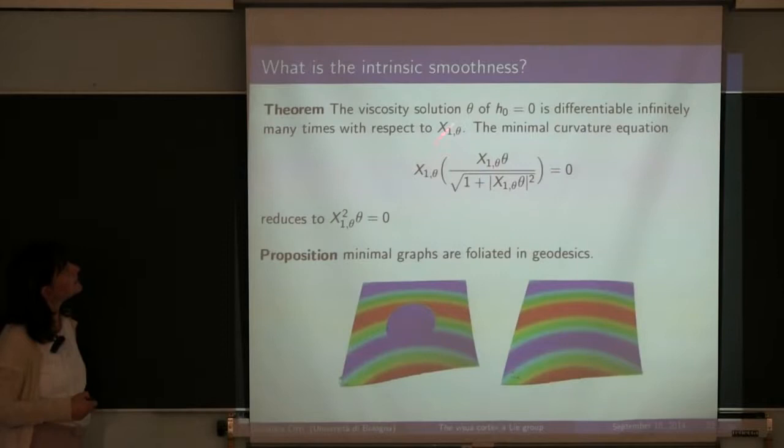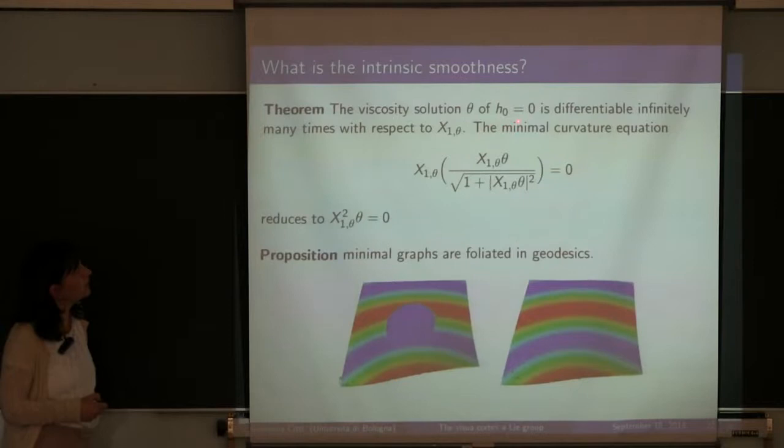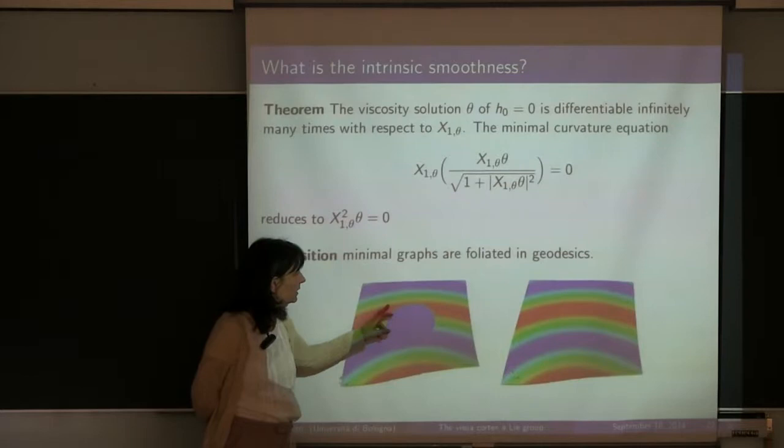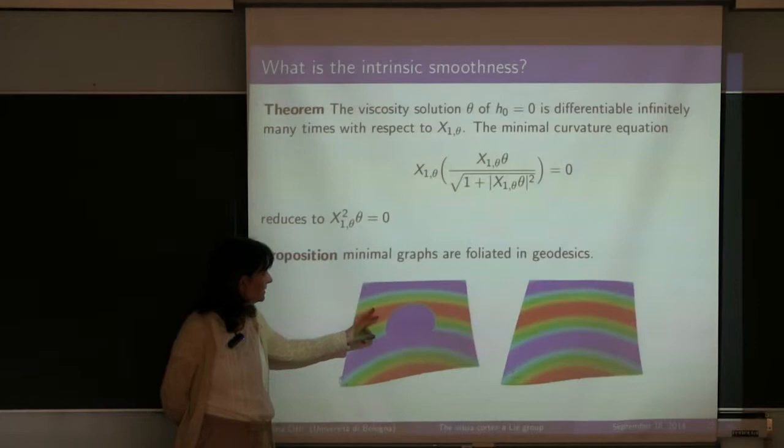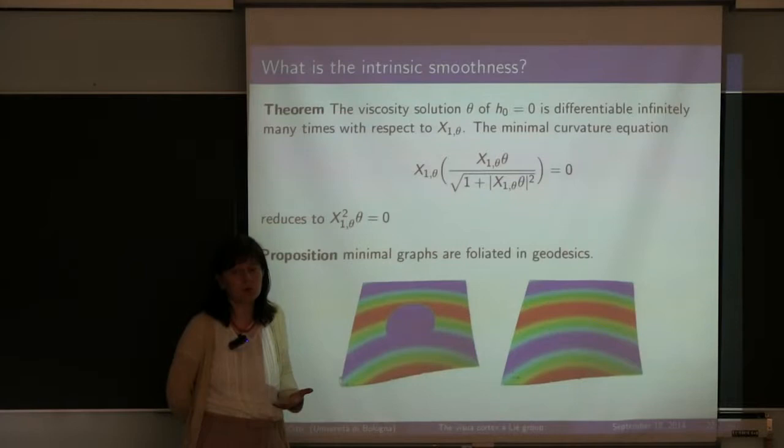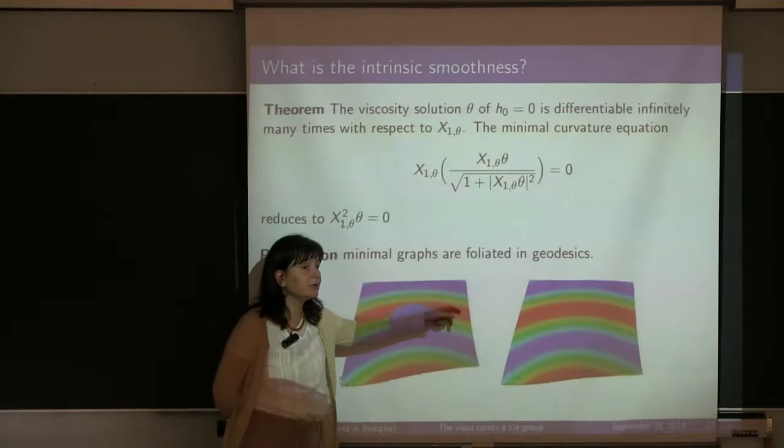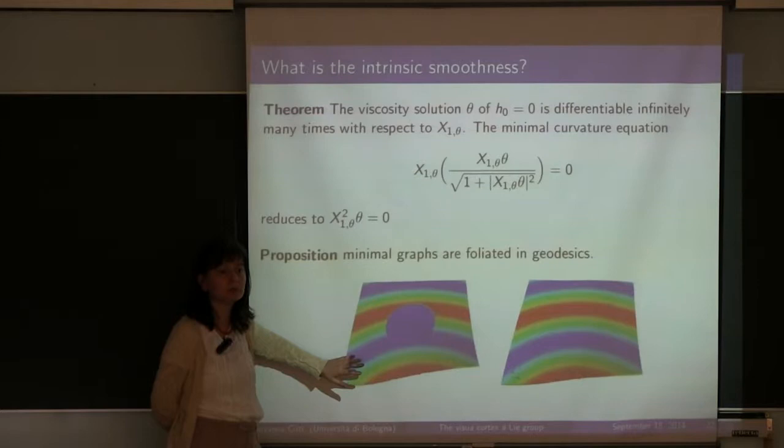When we study the minimal surfaces, the problem with curvature equals zero, the equation becomes this one, and it reduces to x1 squared theta equals zero. In this particular case, we have something which never happened in the Euclidean setting, since on this surface at every point, we only have one horizontal curve. This means we never have transverse regularity or we can have no transverse regularity.